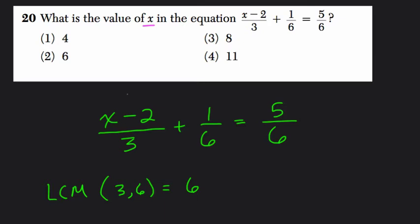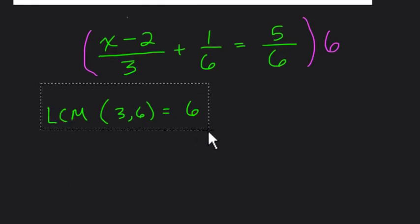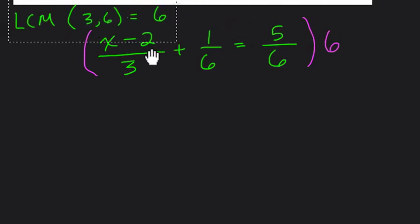Watch what happens when we multiply by the least common multiple of these three denominators. Let's multiply everything by 6. What's going to happen? Let's move our little LCM notation right here.